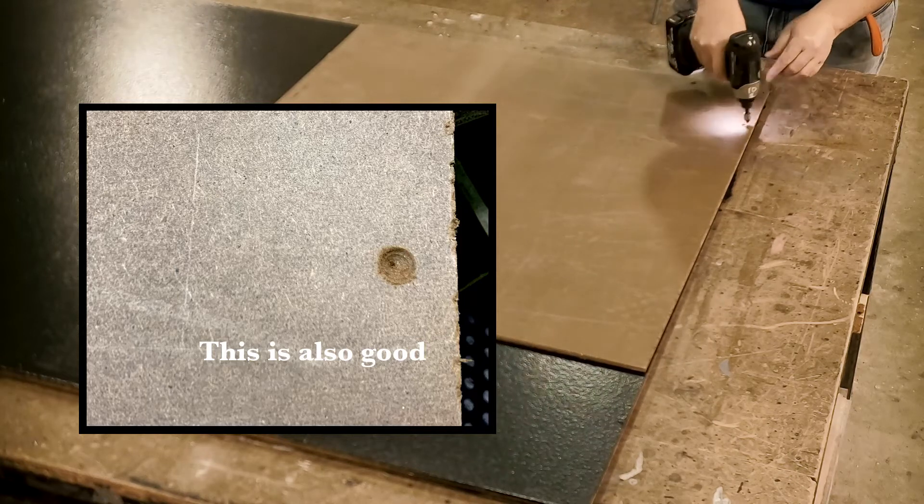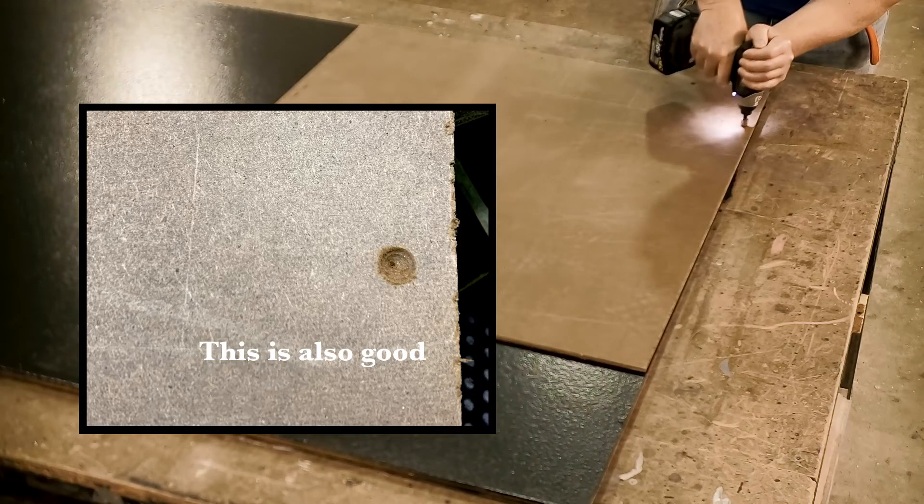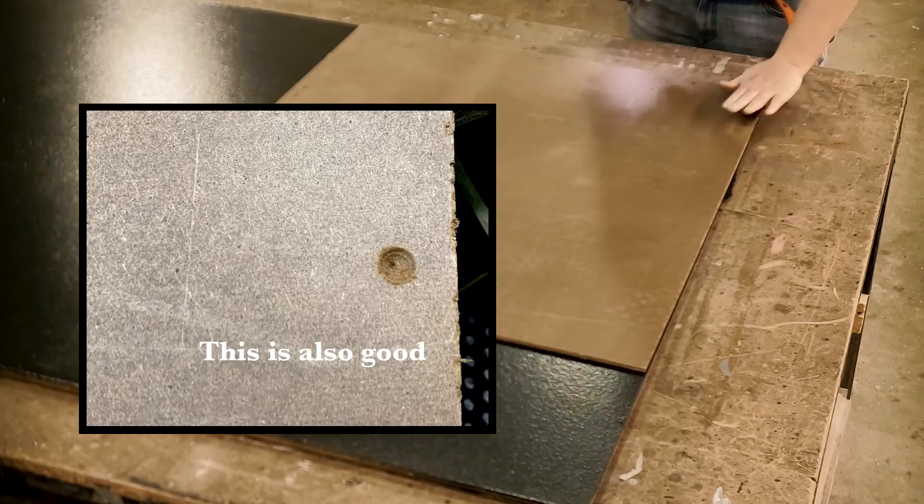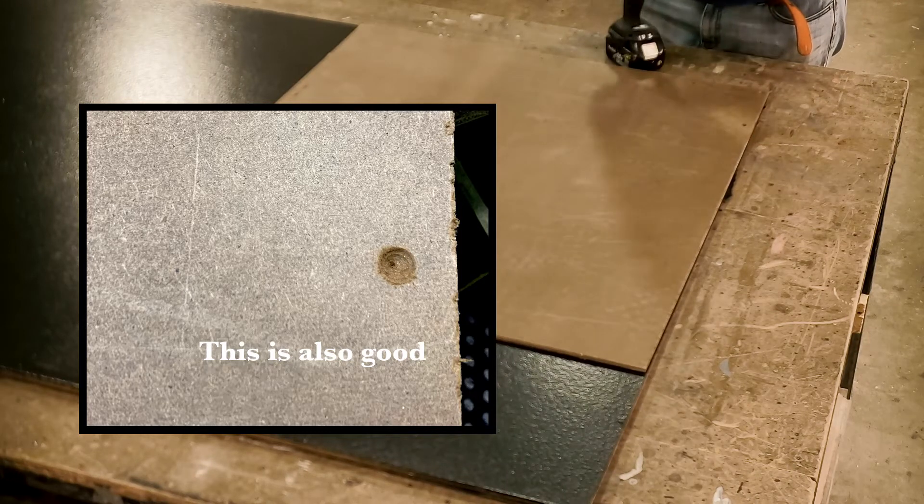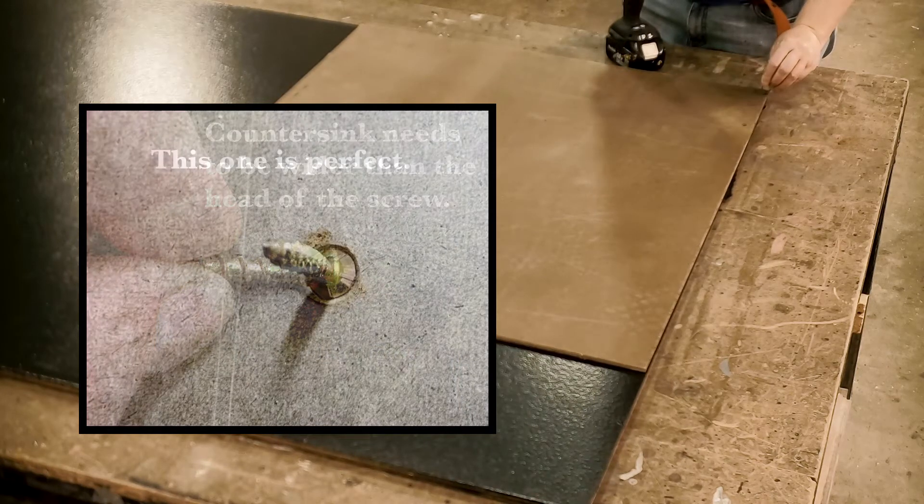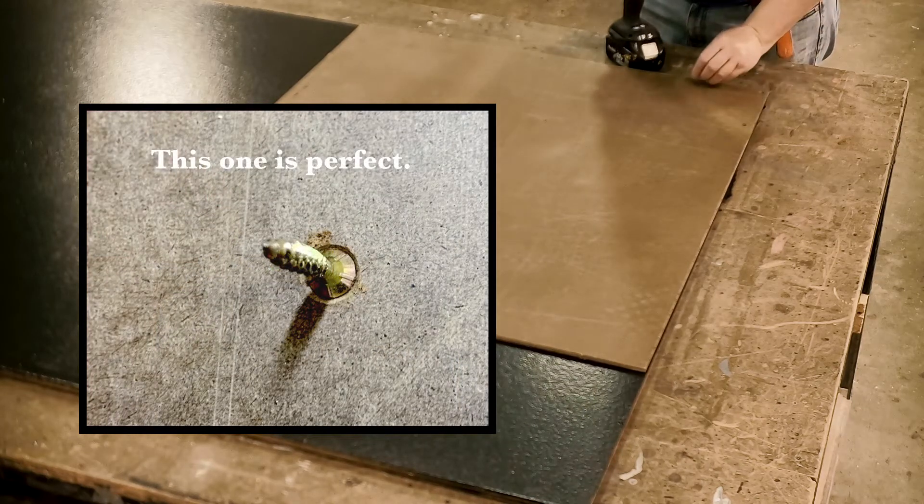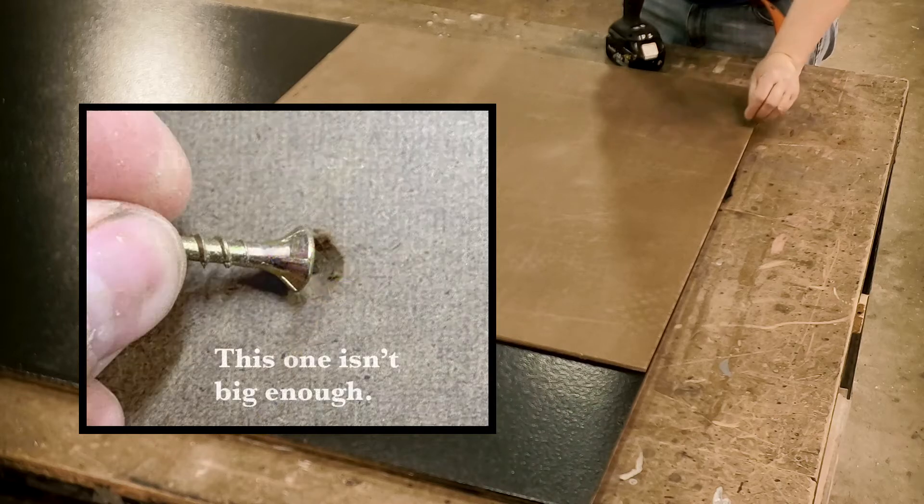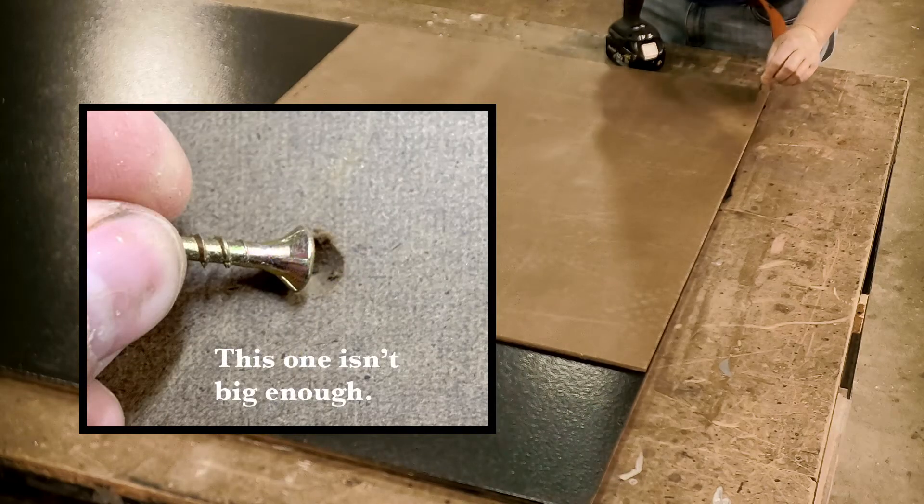That one isn't deep enough - it's not going to have the head of the screw go underneath the surface. If you can't eyeball the size of the countersink, you can always have a drywall screw here and just put it in there and make sure that the head will go below the surface, just like that.